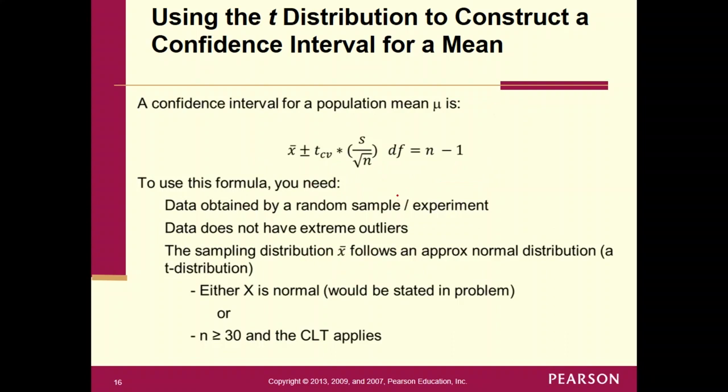So to use this formula, just like anything else, you need conditions. Here are the conditions: In order to use this formula, the data has to be either obtained from a random sample or an experiment. Two, the data does not have extreme outliers. Now, probably the problems that we do are not going to have extreme outliers. If it does, we will tell you. We're pretty much going to assume that there is no extreme outliers in the problems that we're doing here.